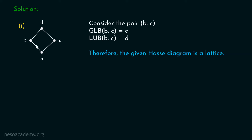I am just considering the incomparable elements. B and C are incomparable, and these are the only two elements in this Hasse diagram which are incomparable. You can also see that the greatest lower bound of B, C is not phi, and the least upper bound of B, C is also not phi. Therefore, the given Hasse diagram is a lattice.